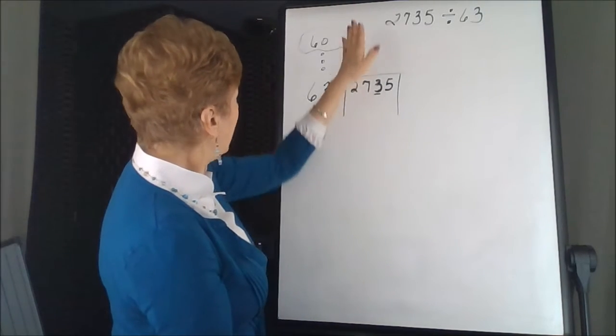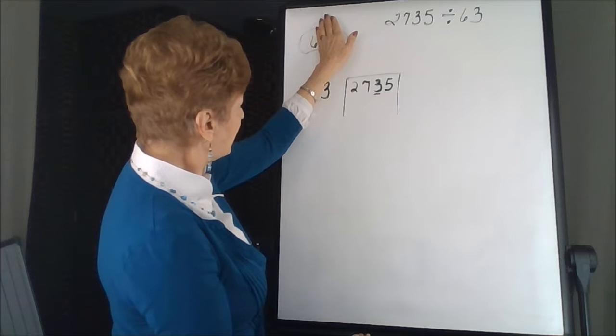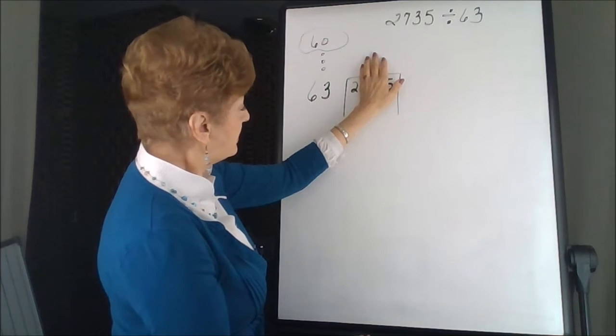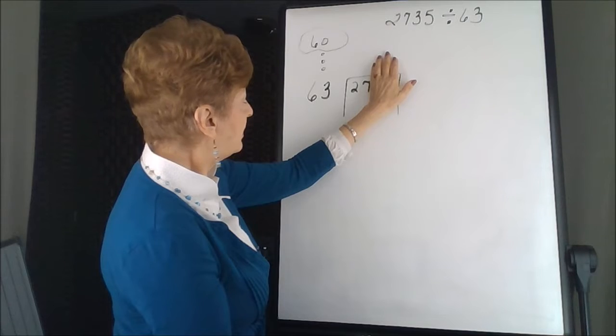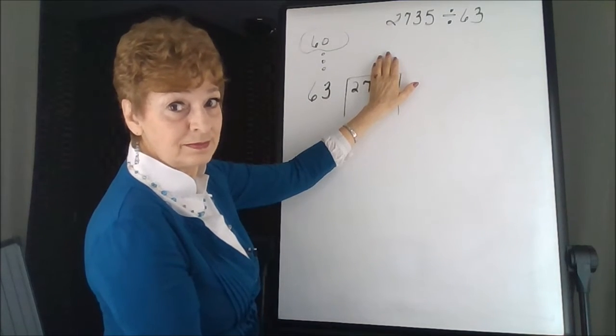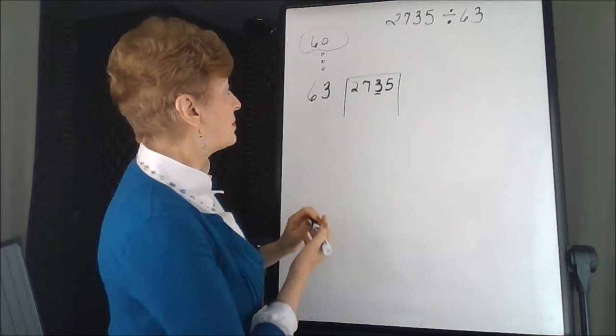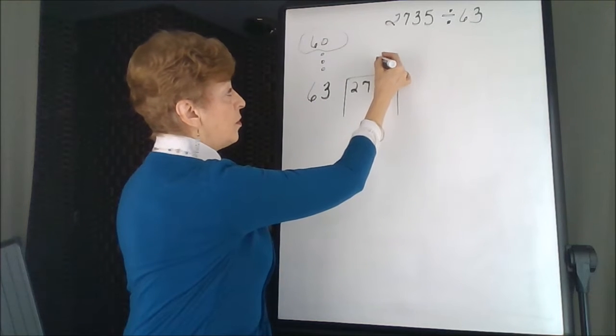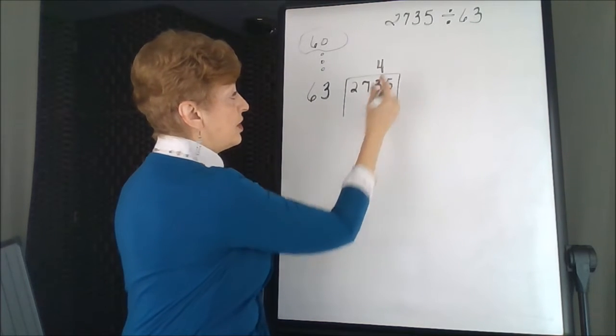So we'll say again, how many times does 6 go into 2? It does not. 27? Does 6 go into 27? Yes, we could do 4 times with that, but I'm going to put the 4 over the number that I've darkened here.